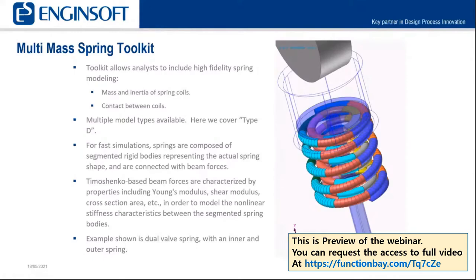There are about four different model types available for the spring toolkit. In this case, we're going to cover what's called Type D. For faster simulations, this toolkit automates the construction of segmented spring bodies, which are rigid bodies. The rigid bodies are then connected with beam forces to represent the stiffness of the spring.